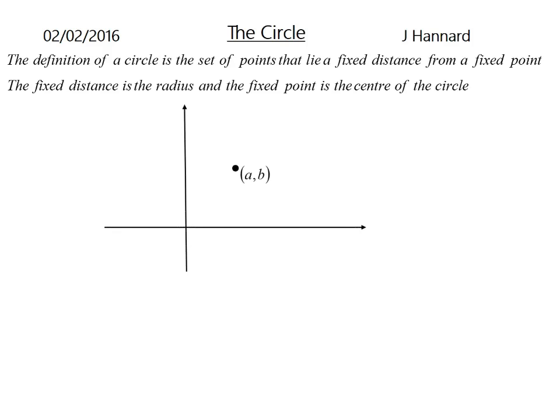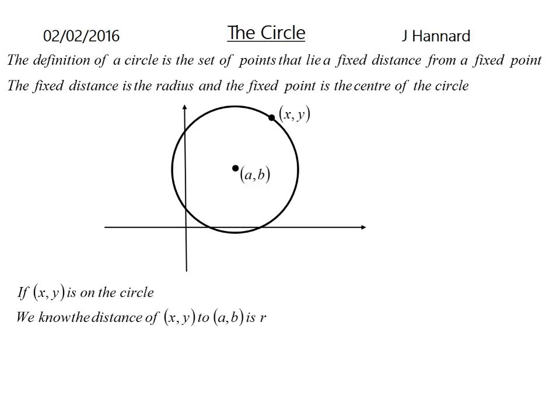So if we have a set of axes there, centre A, B, and we draw a circle around, and if X, Y is on the circle, anywhere on the outer rim, anywhere on this outer rim on the outside, for example there, then the line connecting those is going to be the radius. So we know the distance between X, Y and A, B is R.